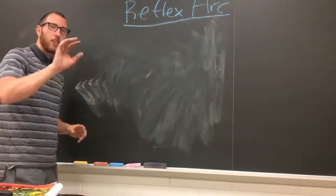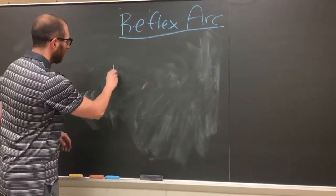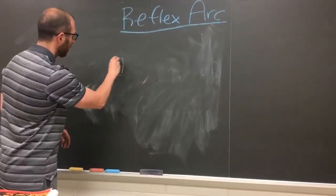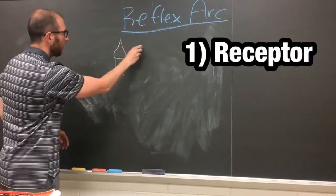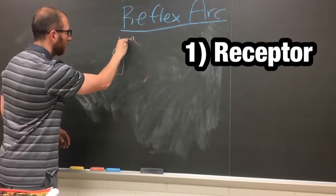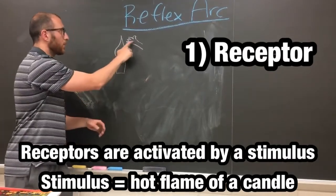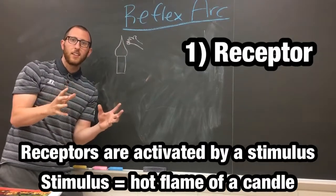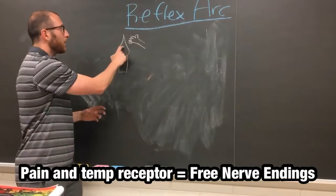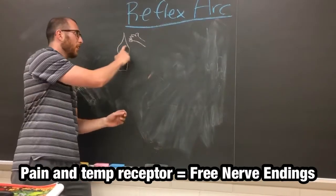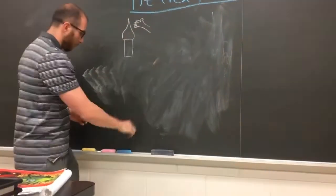There are five main components of a reflex arc. Starting with a candle: if you touch it, that's the receptor in your hand. There are receptors in your skin that pick up the stimulus — in this case, a hot candlestick. That's number one.